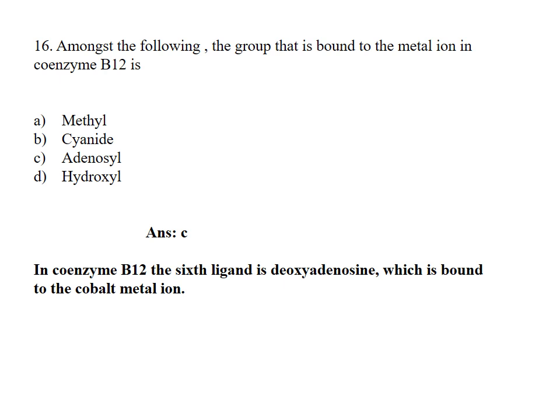Amongst the following, the group that is bound to the metal ion in coenzyme B12 is: Option A, Methyl; B, Cyanide; C, Adenosyl; D, Hydroxyl. Answer Option C, Adenosyl. In coenzyme B12, the sixth ligand is deoxyadenosine, which is bound to the cobalt metal ion.